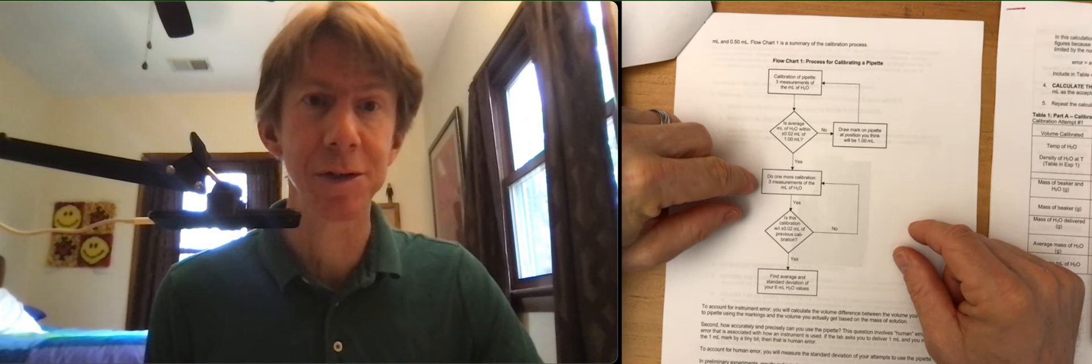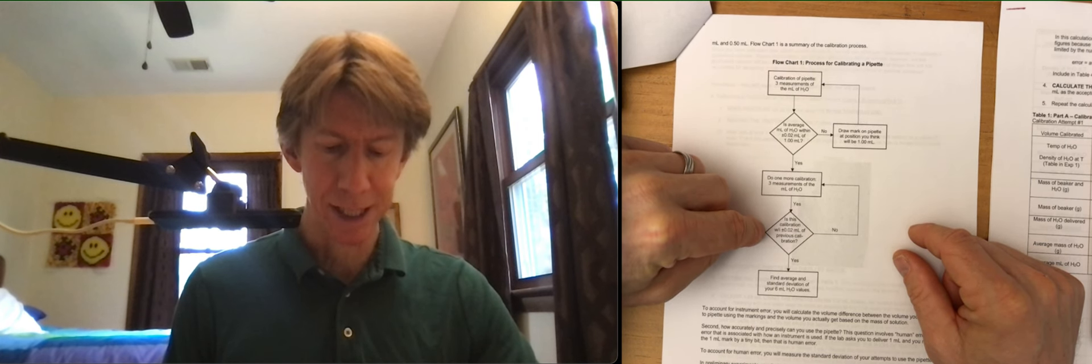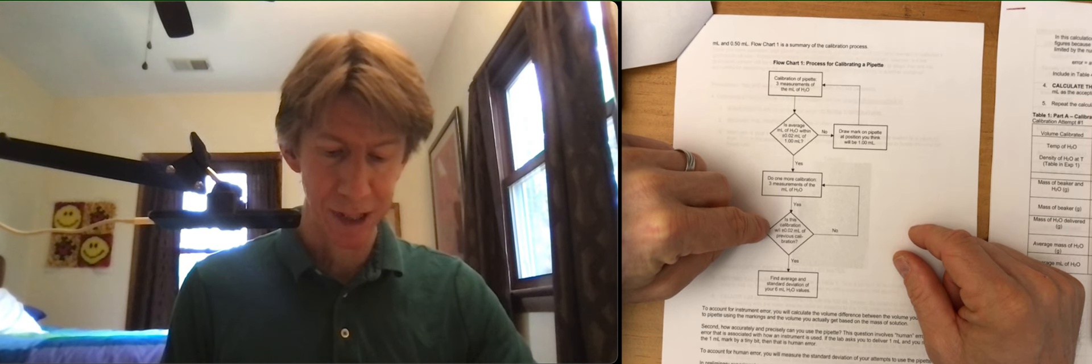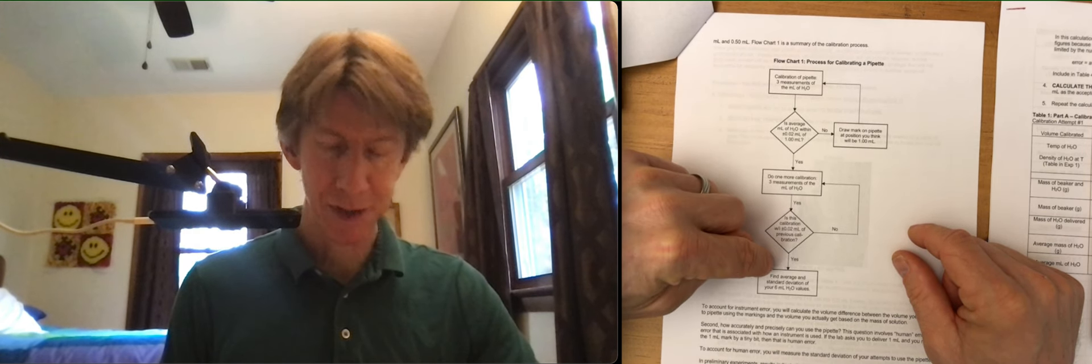Then do three more for a total of six good measurements. And then the second one has to be within plus or minus 0.02 milliliters of the first three measurements. If so you're done.